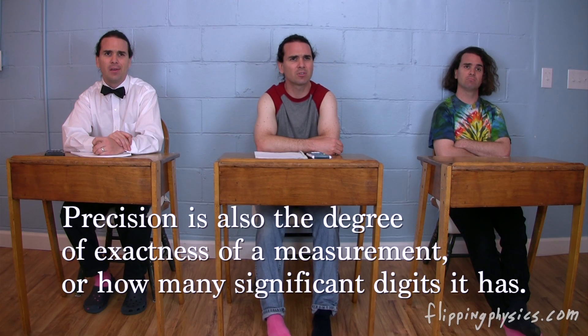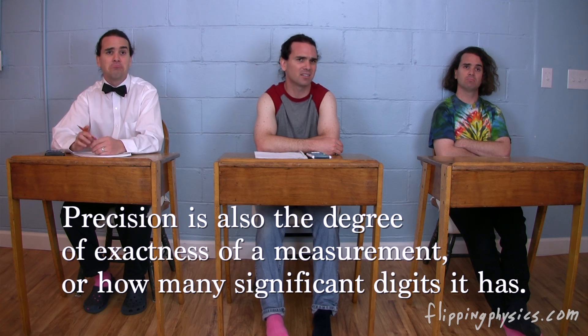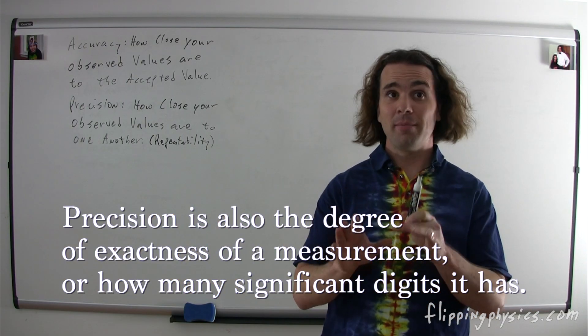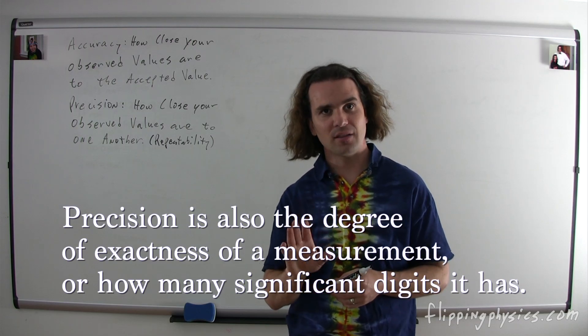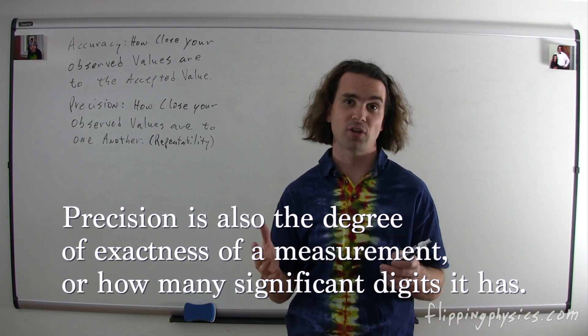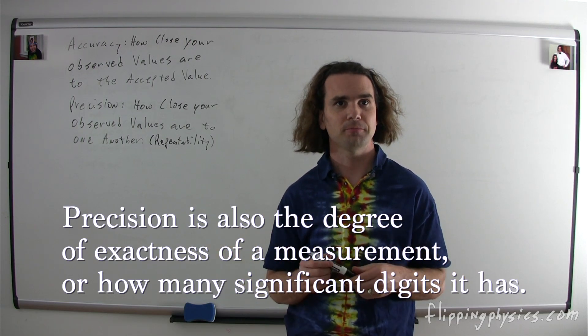However, the scientific community all agrees that to three sig figs, the acceleration due to gravity on Earth is 9.81 meters per second squared. Great. Again, accuracy is how close your observed or measured value is to the accepted value. And precision... Precision is how close your observed or measured values are to one another. Another way to look at precision is how repeatable your experiment is.